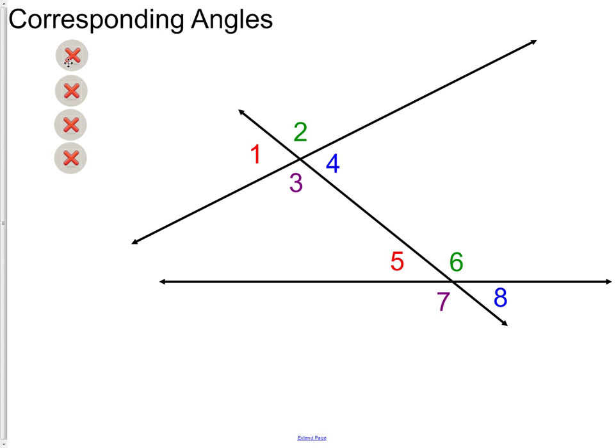Corresponding angles, then, I would match angle one with angle five. Notice how angle one is in the top left of this group, and angle five is also in the top left of that group. Our other correspondings would be two and six, three and seven, and four and eight. Those are all of our corresponding, or matching, angles.